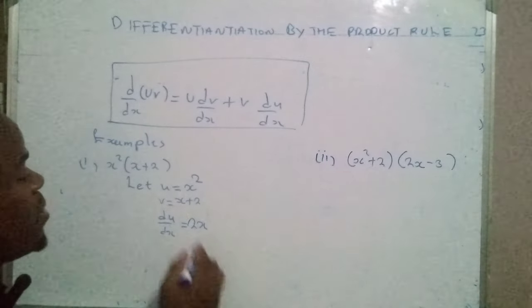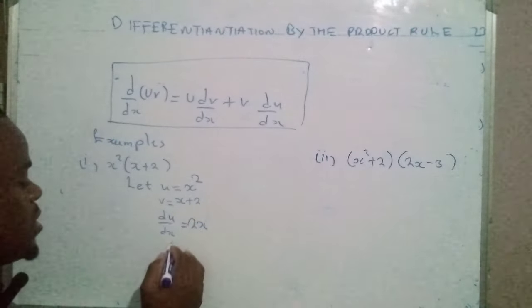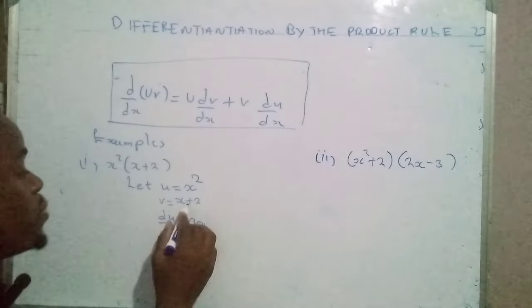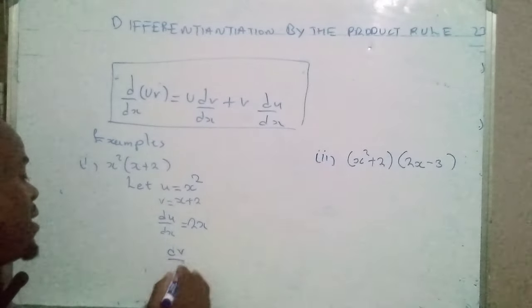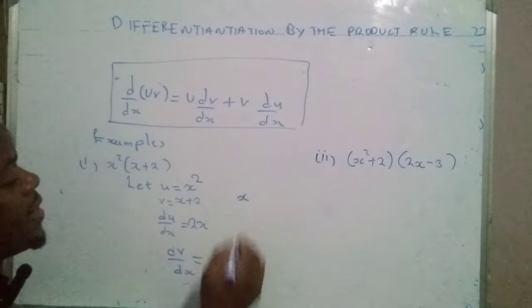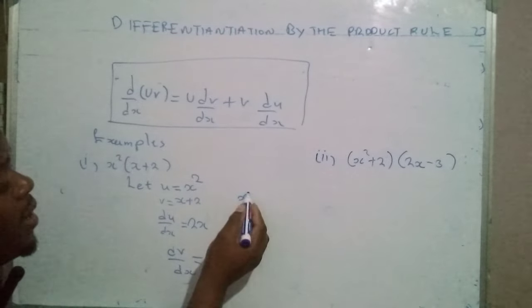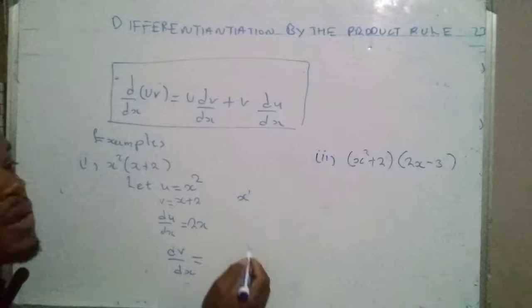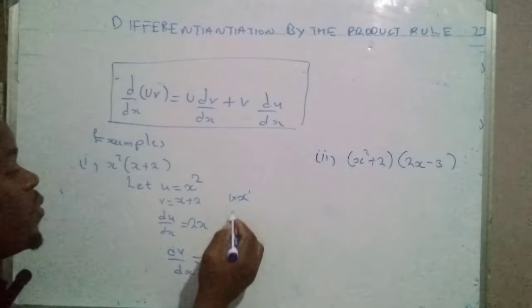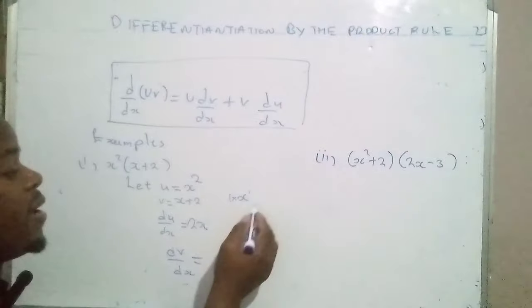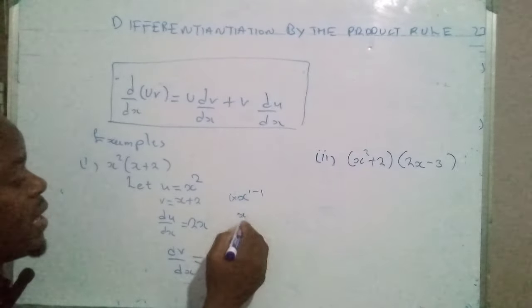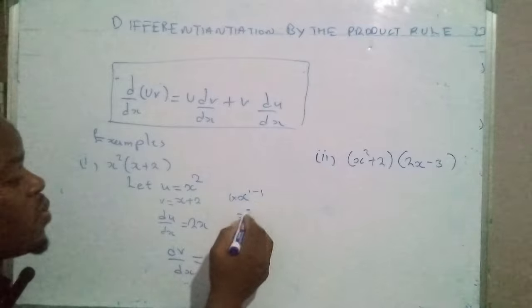The derivative of u is 2x. Now for the derivative of v with respect to x: dv/dx — this x has a coefficient of one that hasn't been indicated, so the one will drop and multiply by the variable, then you subtract the one, giving one times x to the power zero.